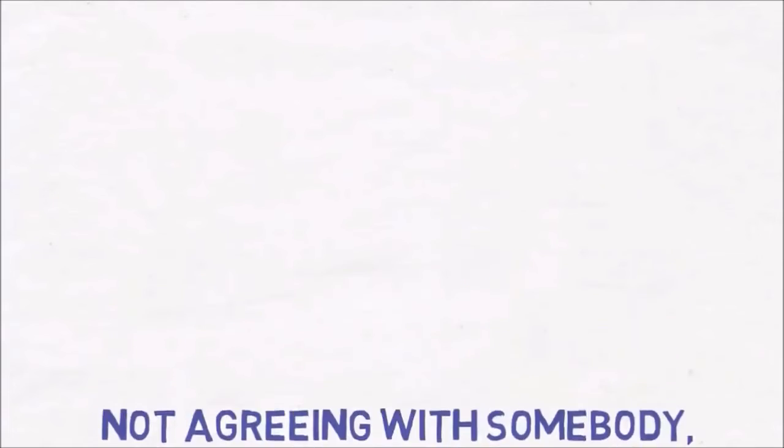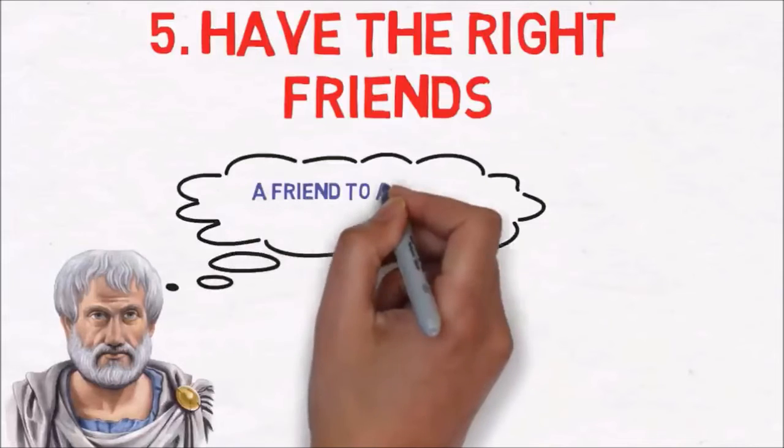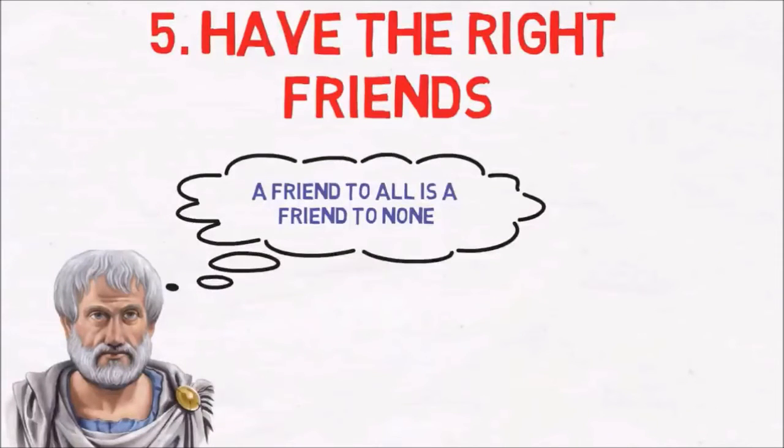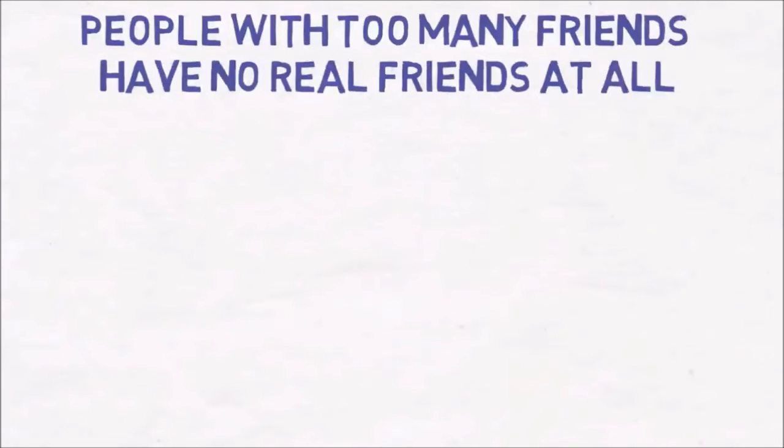Number five: Have the right friends. In the words of Aristotle, a friend to all is a friend to none. There is an old saying that people with too many friends have no real friends at all, and Aristotle's teaching reflects this saying.